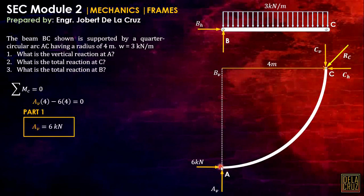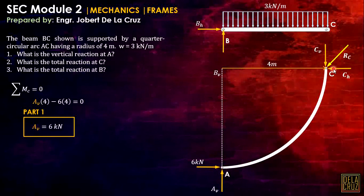By equilibrium on member AC, since there are no other vertical forces involved, AV must equal CV, and the horizontal reaction of 6 kN must equal CH. This is the principle of the two-force member: a member loaded only at two points with no load in between and no moment reactions at the pins.